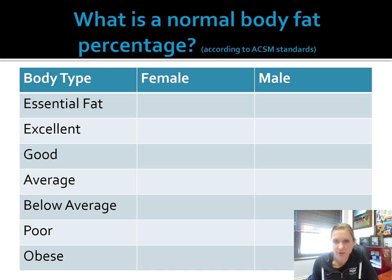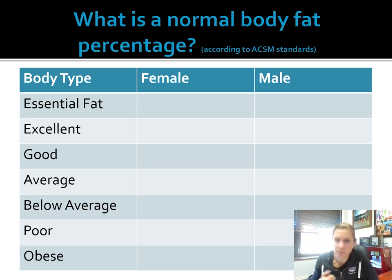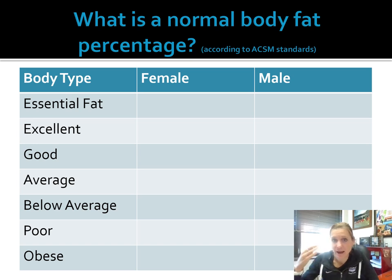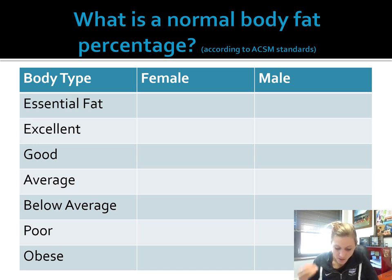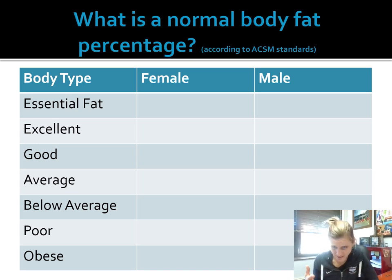As you were probably writing your lab report, you might have found some different numbers, and that's totally fine. ACSM is our governing body for exercise science and kinesiology, but there are lots of other organizations who have different standards. That's okay if you used something different in your lab report — just have a good idea of what average is, what essential is, and what obese is.